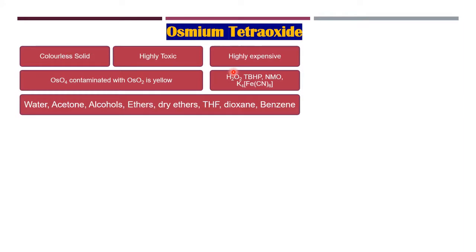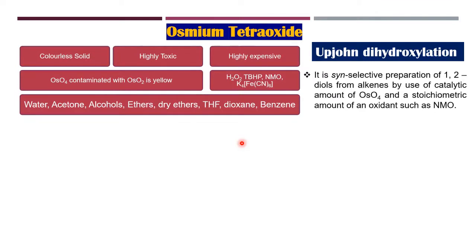After reaction, osmium tetroxide can be regenerated using other co-oxidants, which are obviously hydrogen peroxide. We can use TBHP, which is tert-butyl hydroperoxide, or N-oxides such as NMO, or one can even use potassium ferricyanide. Solvents include water, acetone, alcohol, ether, dry ether, cyclic ethers such as THF or dioxane, or non-polar solvents such as benzene.